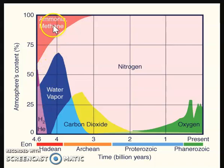You'll notice that there's a lot of ammonia and methane in the early atmosphere, and there are a couple of theories about where those came from. One important thing to know is that during this time period of the early formation of the Earth, there were lots of comets and asteroids and bits of rock all floating around. All of that debris could collide into the Earth, and those are called bolides.